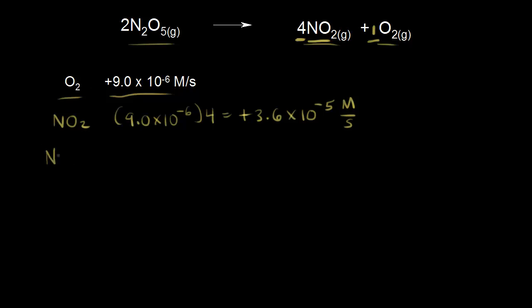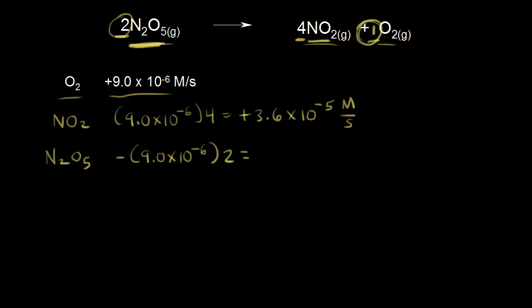What about dinitrogen pentoxide, N₂O₅? Looking at the mole ratios, for every one mole of oxygen that forms, we are losing 2 moles of dinitrogen pentoxide. So starting with the rate of formation of oxygen, because the mole ratio is 1 to 2, we multiply by 2. And since we're losing dinitrogen pentoxide, we put in a negative sign, giving us negative 1.8×10⁻⁵ molar per second. So dinitrogen pentoxide disappears at twice the rate that oxygen appears.